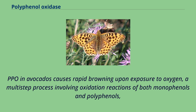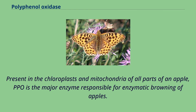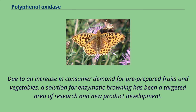PPO in avocados causes rapid browning upon exposure to oxygen, a multi-step process involving oxidation reactions of both monophenols and polyphenols, resulting in O-quinone products subsequently converted irreversibly into brown polymeric pigments. Present in the chloroplasts and mitochondria of all parts of an apple, PPO is the major enzyme responsible for enzymatic browning of apples. Due to an increase in consumer demand for pre-prepared fruits and vegetables, a solution for enzymatic browning has been a targeted area of research and new product development.